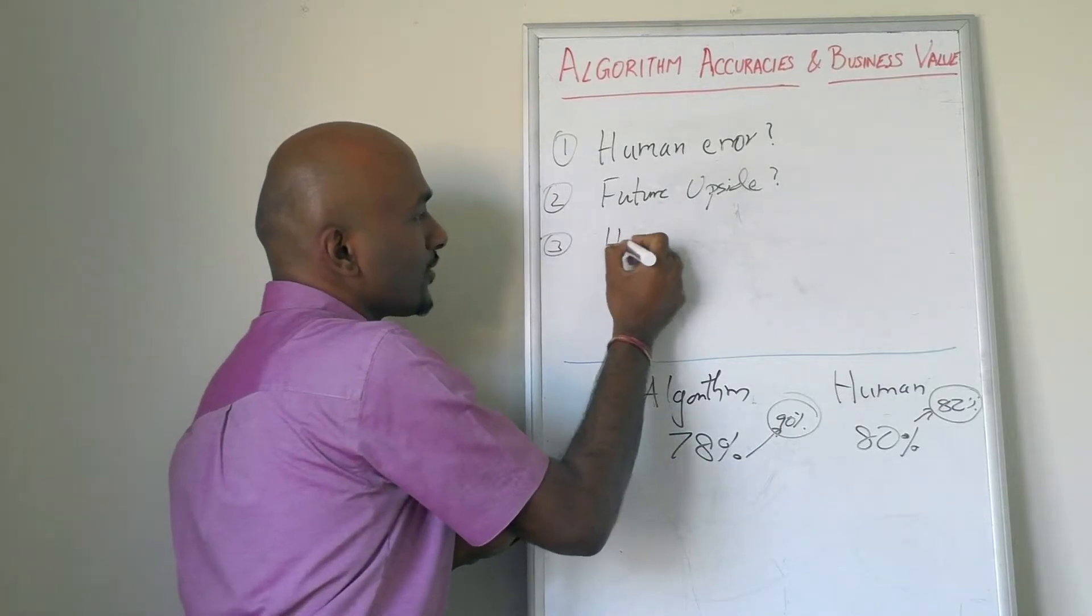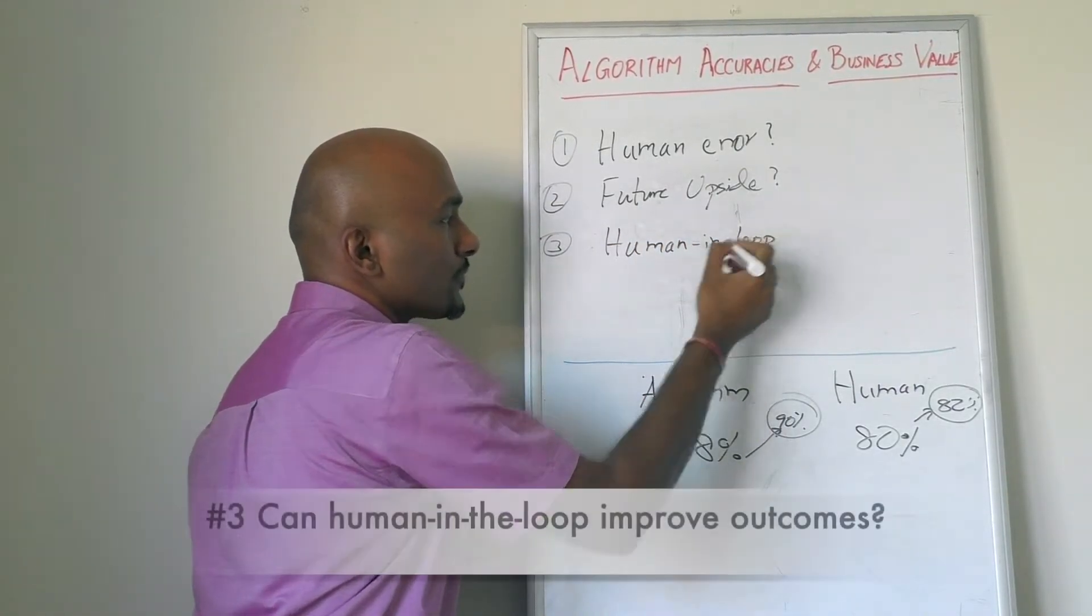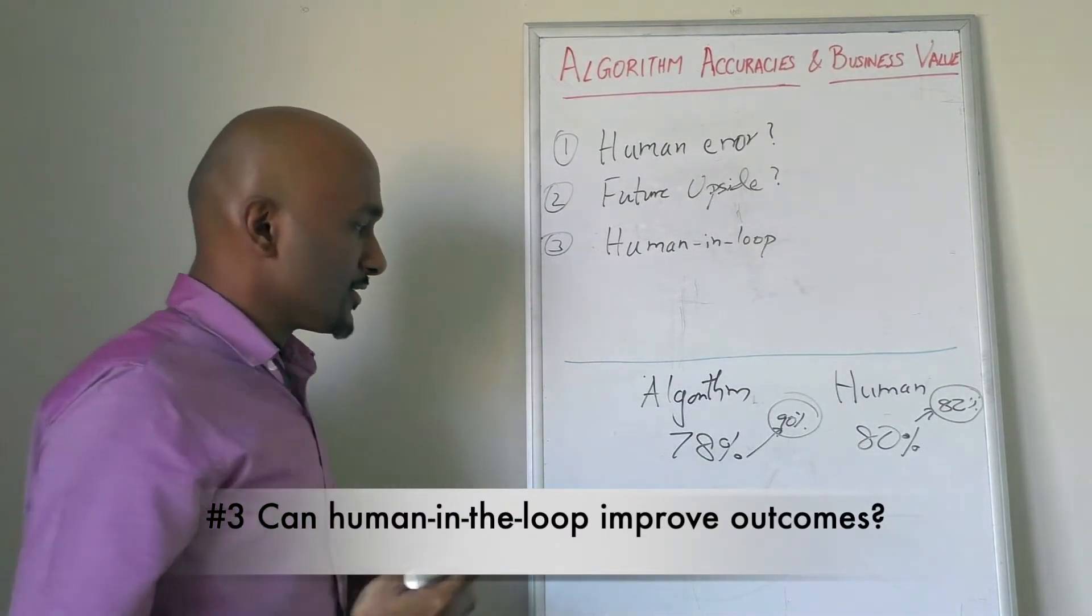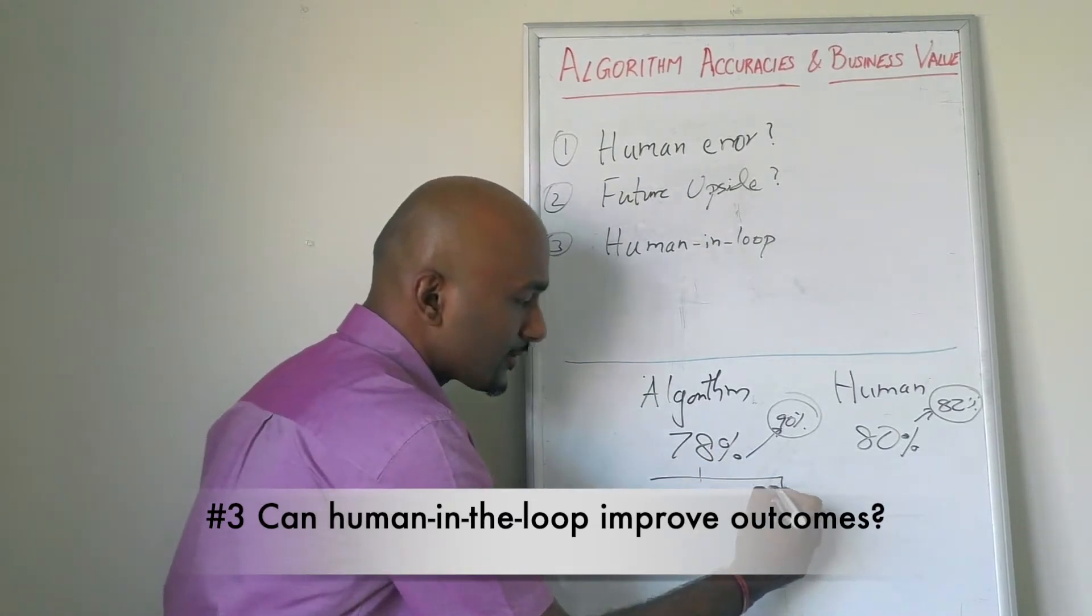The third question you should ask is, do I have the option of keeping humans in the loop? And how can I bring in the synergy? When you have 78% accuracy, there will be certain scenarios where the model is pretty good.